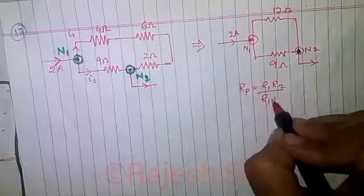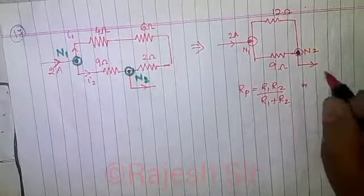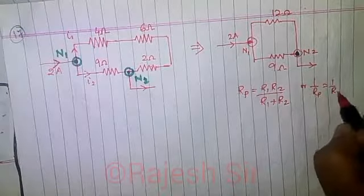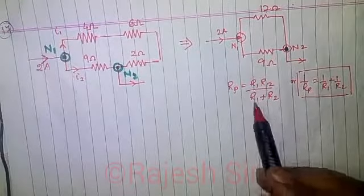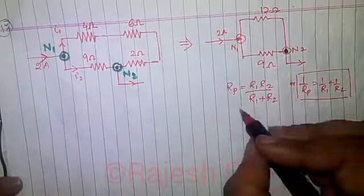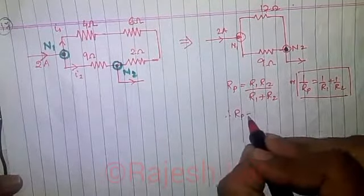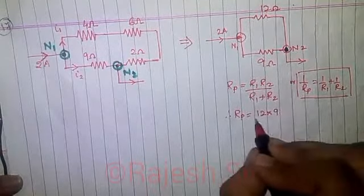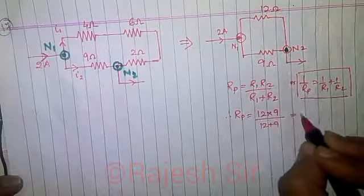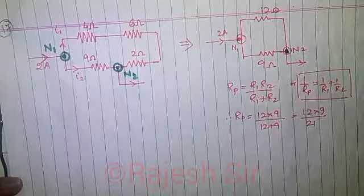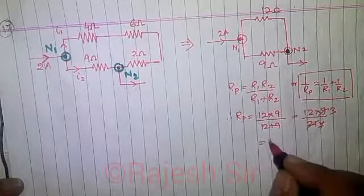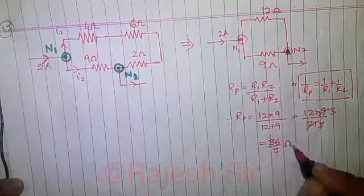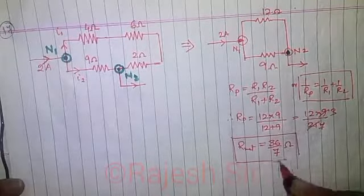So 12 ohm and 9 ohm are in parallel, so resistance in parallel is given by the formula r1 r2 upon r1 plus r2. As you already know that 1 upon rp equals 1 upon r1 plus r2. So I would like you to learn - instead of this formula, prefer to learn this formula: rp equals r1 r2 upon r1 plus r2. Therefore rp equals 12 into 9 upon 12 plus 9, and that is 12 into 9 upon 21. 3 times 9, 3 times 3 are 9, 3 times 7 are 21, and 12, 3s are 36 by 7 is the total net resistance of the given circuit.